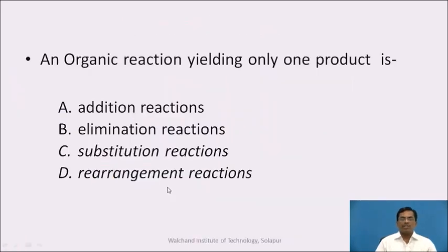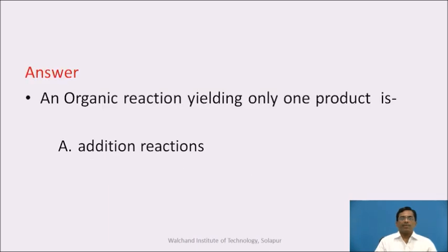At this juncture, pause the video and answer the question: An organic reaction yielding only one product is — A, addition reaction; B, elimination reaction; C, substitution reaction; or D, rearrangement reaction? The answer is A, that is the addition type of reaction.